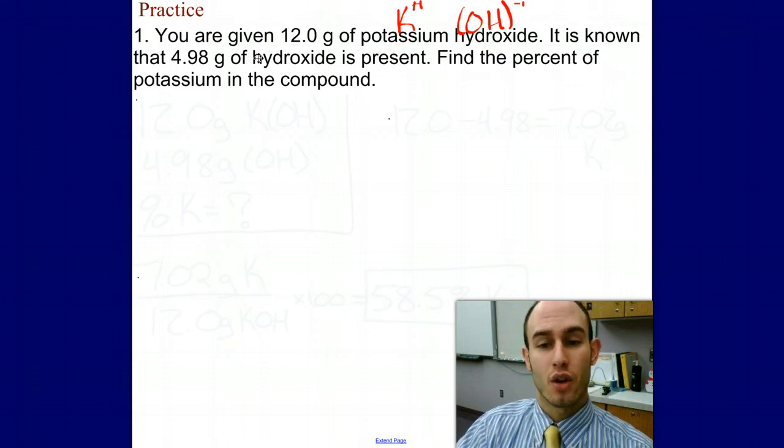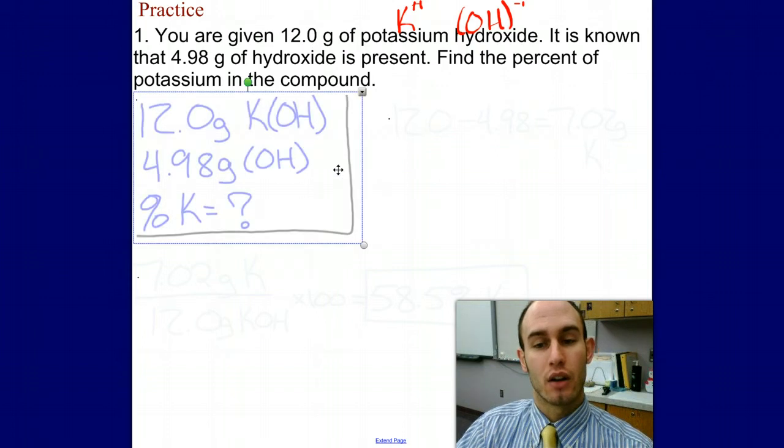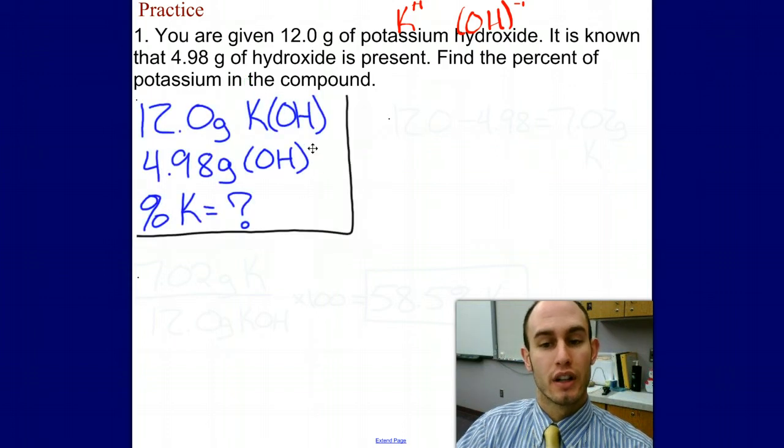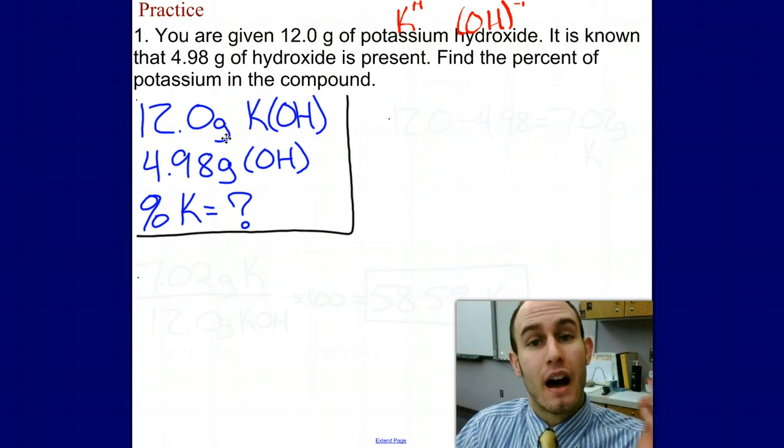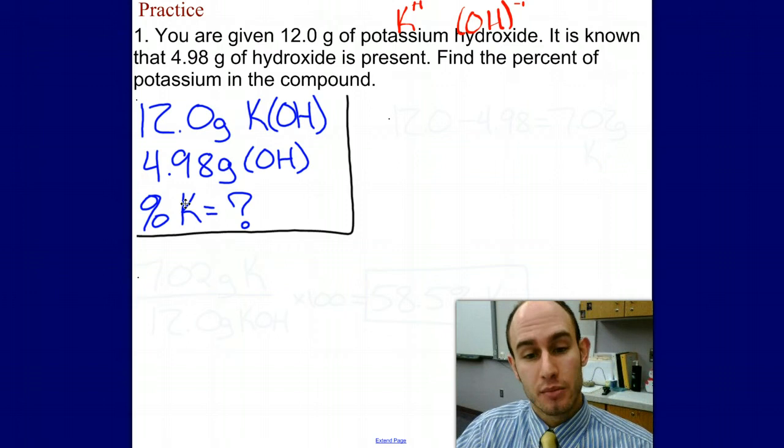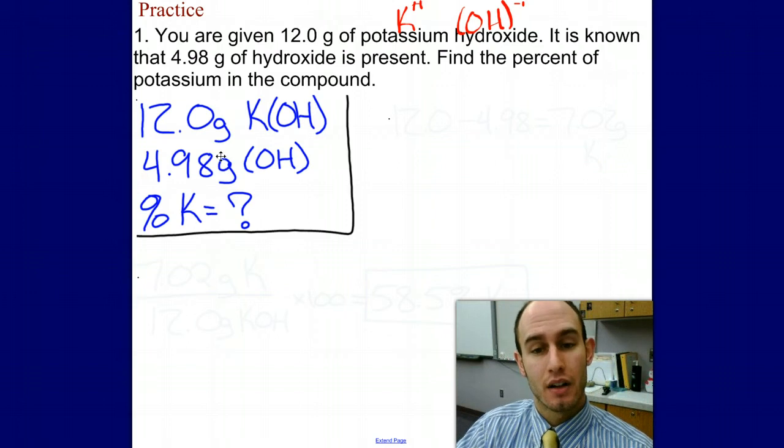In this example I need to start how I have with everything else. I'm going to write down what I'm given: 12 grams of potassium hydroxide, 4.98 grams of hydroxide, and I'm asked to find the percentage of K in my compound. I need to know how many grams of potassium I have. I can subtract these two values to determine the grams of K.